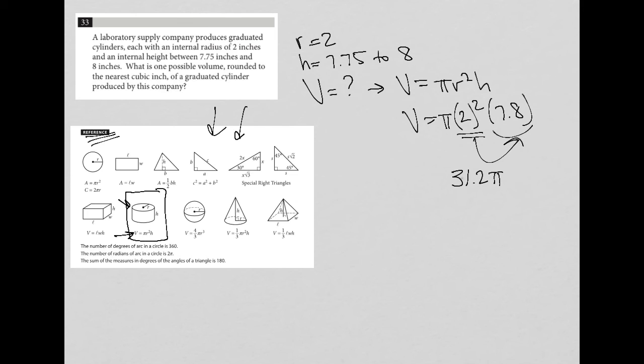But I can't bubble in pi for this answer. So I'm going to just say, what is 31.2 times pi? And what I get is 98.01 with a lot of other digits after that. And the question asks me to round to the nearest cubic inch. So I'm going to go with 98. My answer here would be 98.